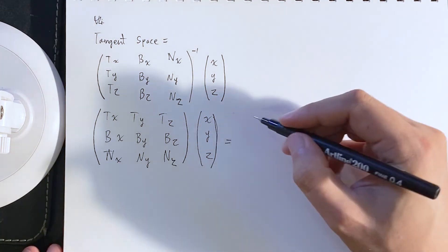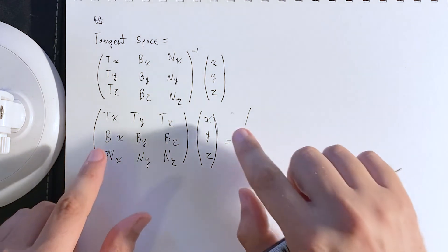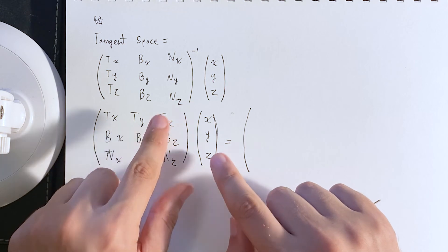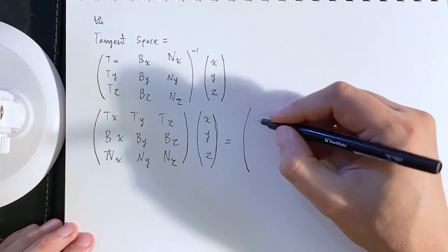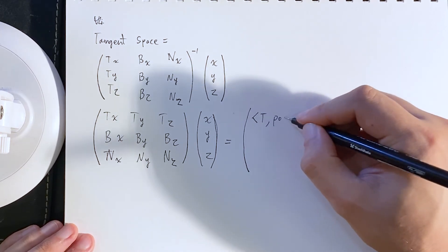And then if we look at this, well, this should be a three by one. We have for the first component it's tx times x, ty times y, tz times z. Well, that looks very similar to a dot product. And so it's the dot product of the tangent with the position.